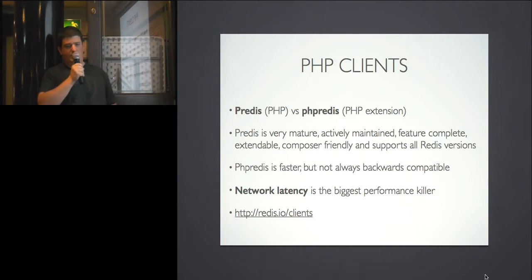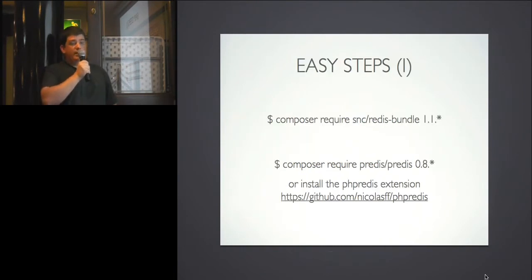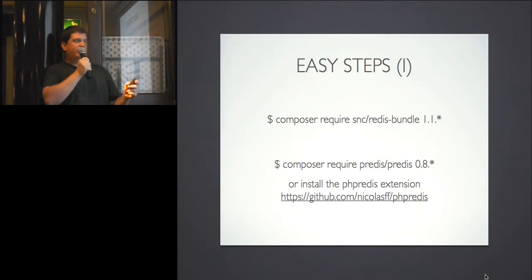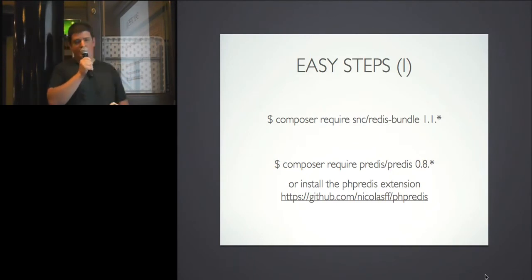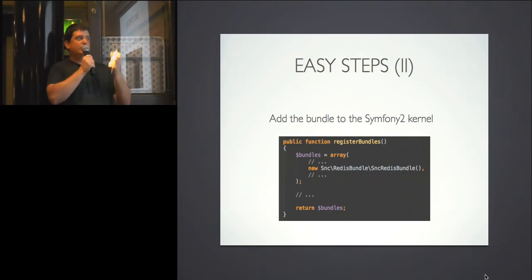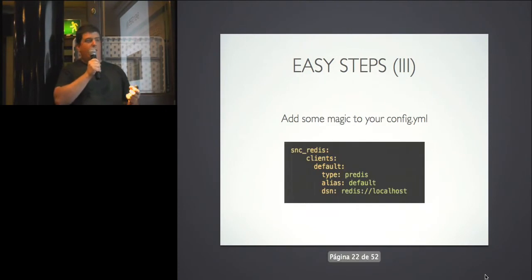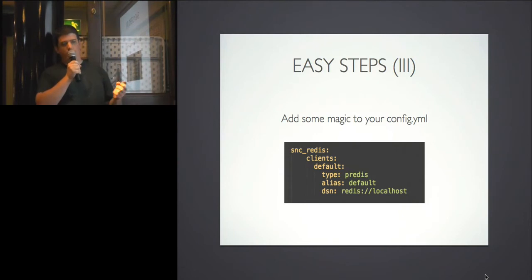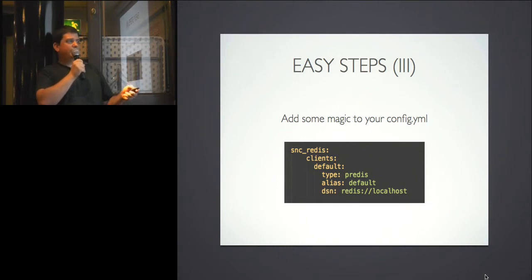For easy setup with Symfony, require the SNC Redis bundle — current version is around 1.1.x — and then depending on whether you're using Predis or phpredis, add the corresponding dependency. Once done, add the bundle to the registerBundles function. The last thing is some configuration to let your Symfony application know where your Redis installation lives. This would be a Redis installation on the same machine as the PHP application, using snc_redis as the main bundle configuration key.